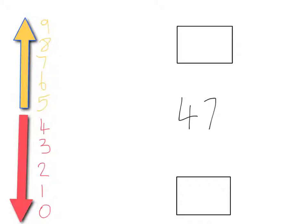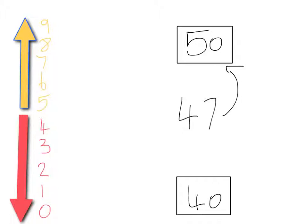We then look at the number forty-seven and we can see straight away that the seven digit is a number that we round up. So we need to work out which multiples of ten forty-seven lies between. It lies between forty and fifty. And with it being a seven, we round forty-seven to fifty.